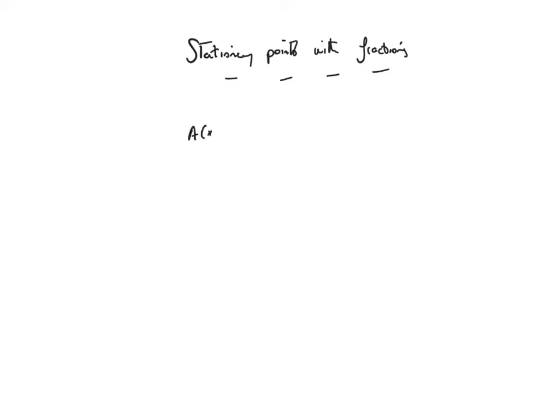So what we're going to do is find stationary points and determine their nature. Let's say we've got A as a function of x is equal to x squared plus 432,000 over x. And we're going to find stationary points to determine their nature.